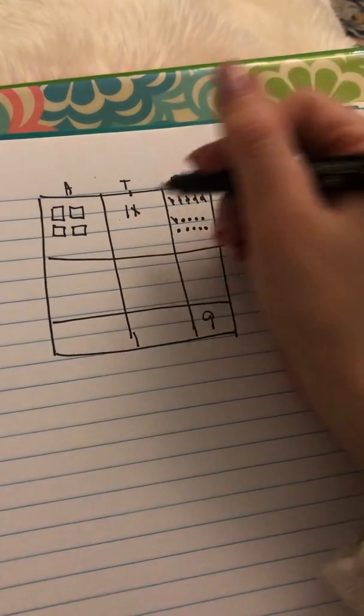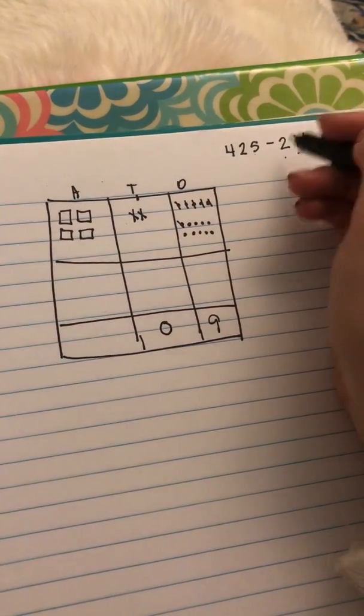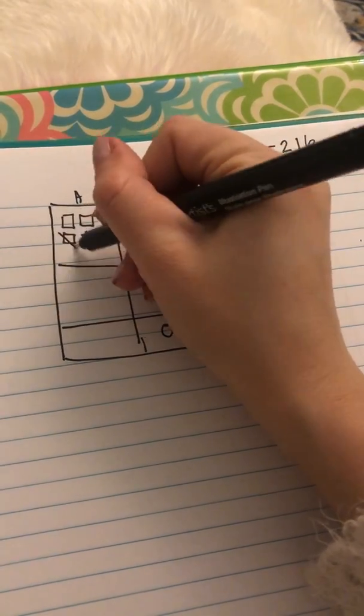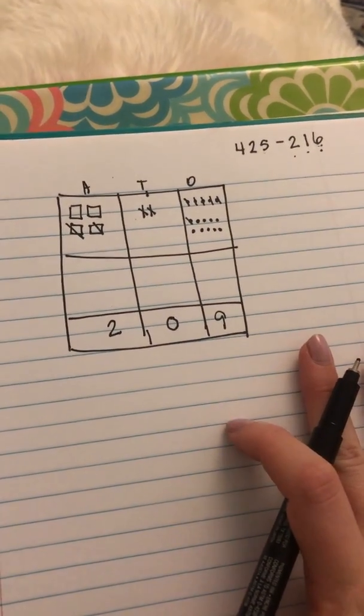All right, then I'm going to take one away from the tens place, and I have none left. And then I'm going to take two away from the hundreds place, and I have two left. And that is my final answer, 209.